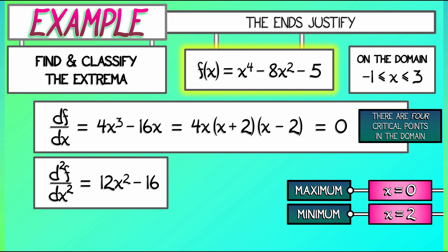But now, what's different in this case is that we have endpoints, two endpoints, at x equals negative 1 and x equals positive 3. Now, classifying those is going to be a little bit more involved.